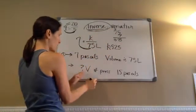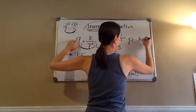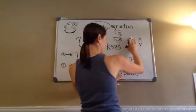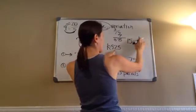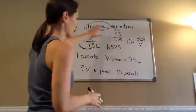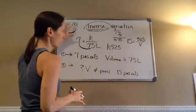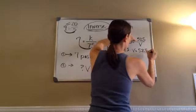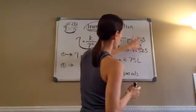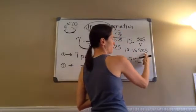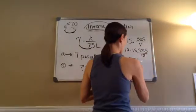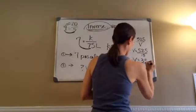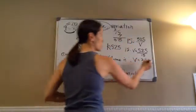Now we actually do the problem. We use P equals K over V. We don't know the volume, so we leave that as V. The pressure is 15 pascals, and K is 525. So 15 times V equals 525. Dividing by 15, V equals 35. Since it's volume, we're working with liters. So the answer is 35 liters.